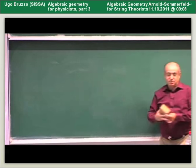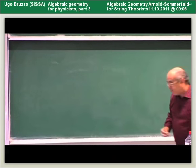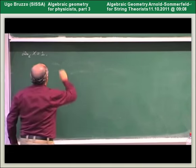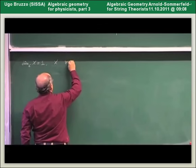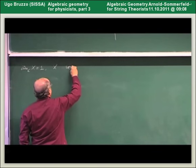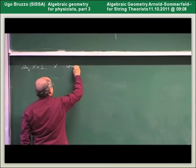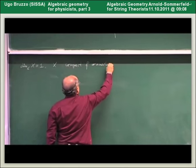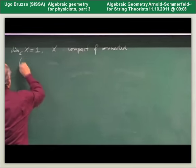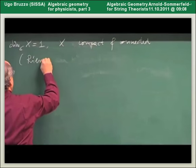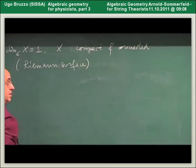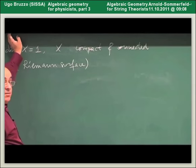But in dimension one, the answer is yes. In particular, if we have a complex manifold whose dimension over the complex numbers is one, and X is compact and connected — this is what is called a Riemann surface — then it always has positive line bundles on it.